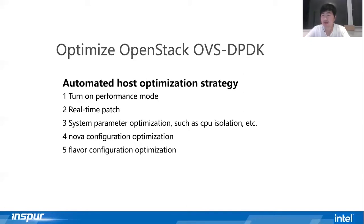First, the BIOS must be adjusted. For example, there is a performance mode in mainstream server BIOS, which can enable one-key adjustment to optimize power and CPU performance and set it to the best mode. Second, apply real-time patches to computing nodes. Third, run-time parameter optimization, mainly based on the number of CPU cores and the amount of memory on the computing node — automatic CPU isolation, setting of OVS-DPDK polling cores, large page memory, and kernel thread pinning.